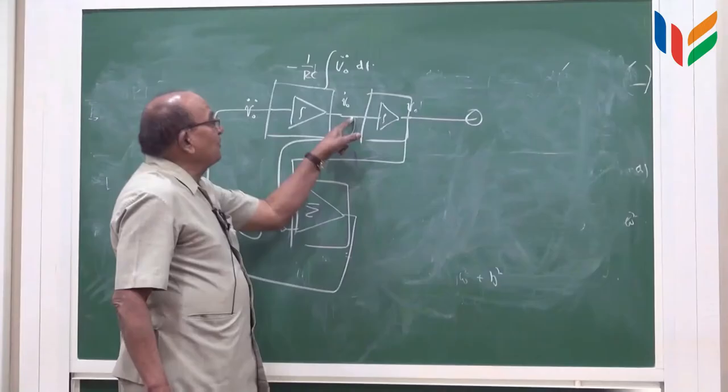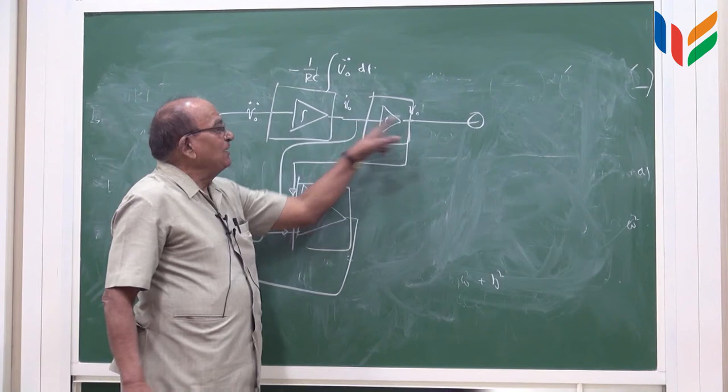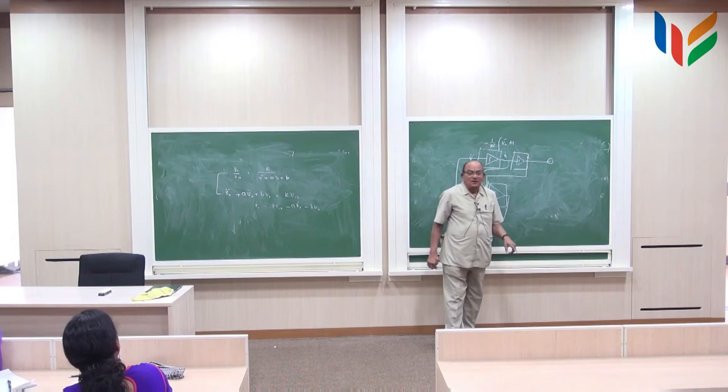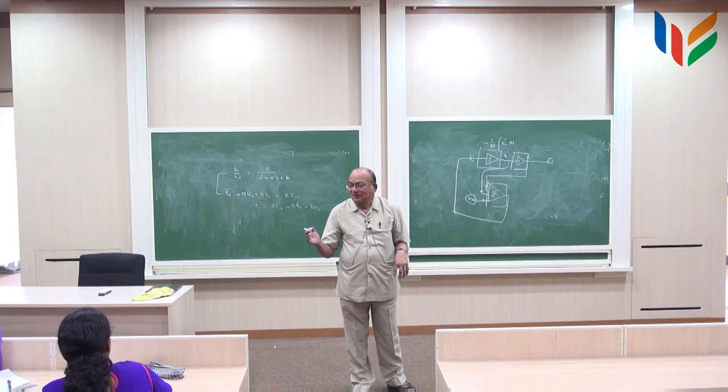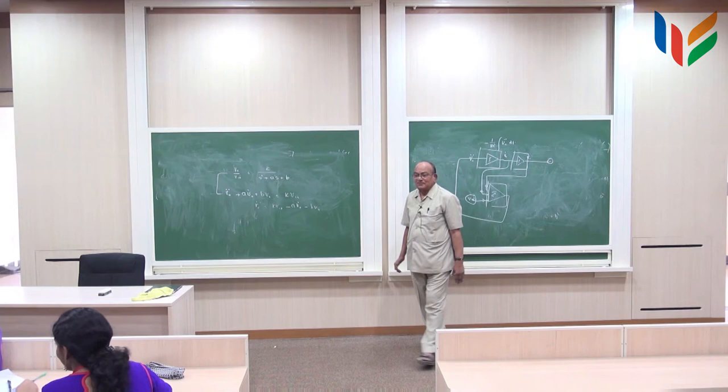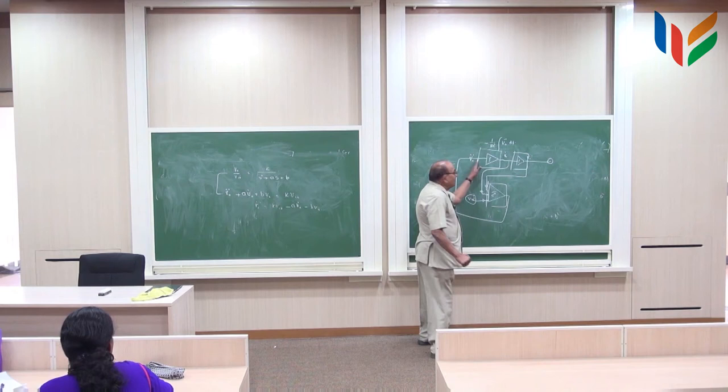There is one more interesting thing. If we take the output from here instead of here, what happens? This output is derivative of this, right? So this output is taken as derivative. In transfer function, what does it mean? Derivative means you multiply by S. So you got a transfer function at this point which is S divided by A S square plus B S plus C. What is that you correspond to? Band pass filter. If I do it here, it turns out to be a high pass filter.